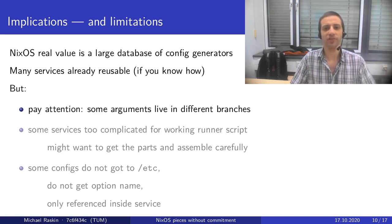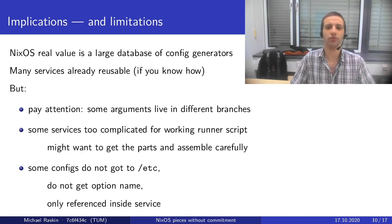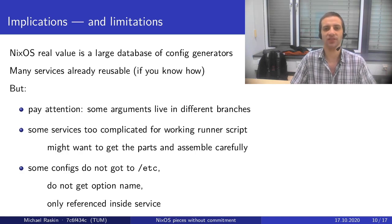Of course, there are some catches. You need to pay attention because many services are configured not just under their own namespace but all over the place. Also, some services are too complicated for a working runner script to be generated automatically by the generic code. You might be able to grab parts of the unit and assemble the correct runner script on a case-by-case basis. And some services have configs that do not go to /etc and also do not get an option name for their content — they are annoying to grab.